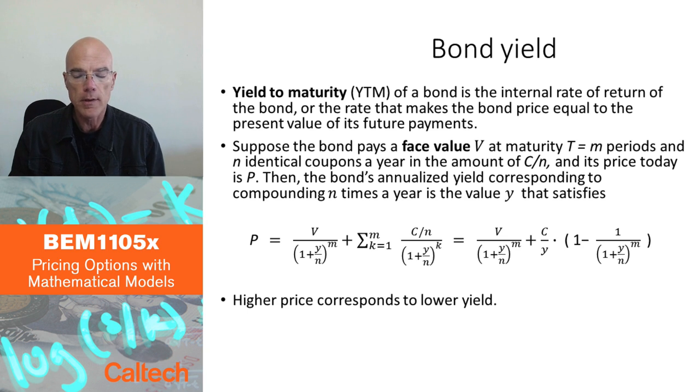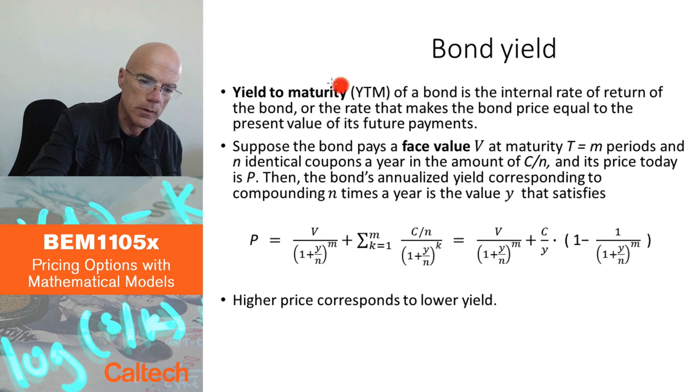Let's define a bond yield, which is how bonds are usually quoted in the markets in terms of their yields. The yield is really the internal rate of return for a bond. Yield is also called yield to maturity, or YTM.